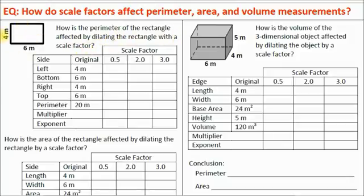Here's our rectangle, and I've already filled in some of this table. We've got four sides: left, bottom, right, and top. I've written down the measurements of each. We know that opposite sides are congruent. So if the left is 4 meters, the right is 4 meters; bottom is 6 meters, top is 6 meters. The total perimeter of this rectangle is 20 meters. What happens if we scale this rectangle by a factor of 0.5?